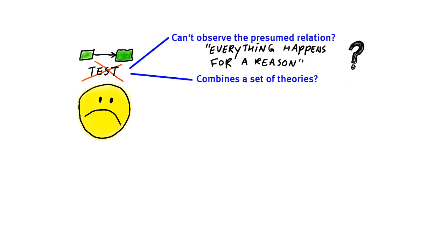Sometimes a theory will combine a set of theories. For instance, the use and gratification theory, which is a complex theory that we will discuss later in depth in this class. The point for now is that it contains several ideas about reality.